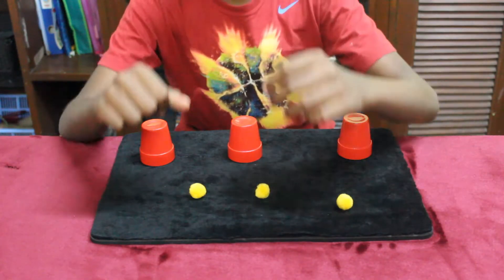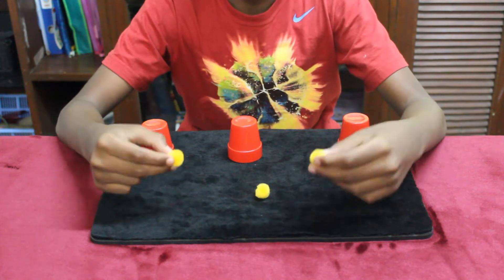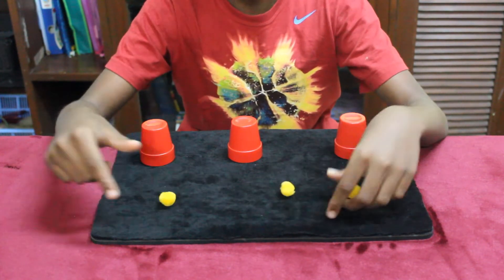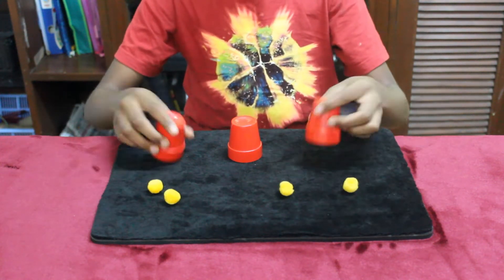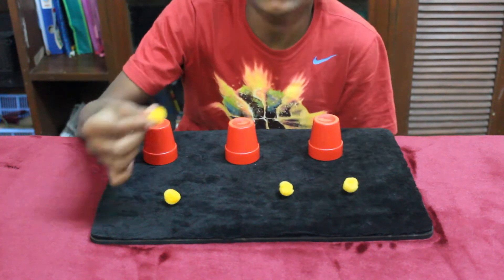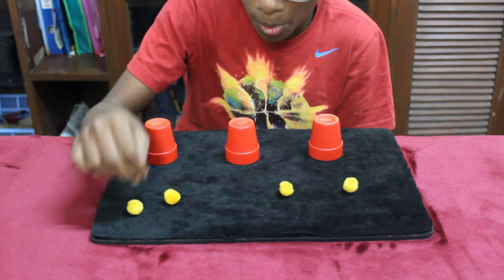Alright guys. So here's the explanation of this effect. So here's what you're going to need. You're going to need three balls and you're going to need three cups. But the secret is you'll use an extra ball. So you're going to need four balls and three cups.